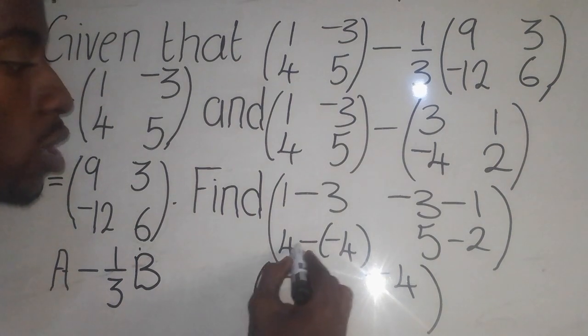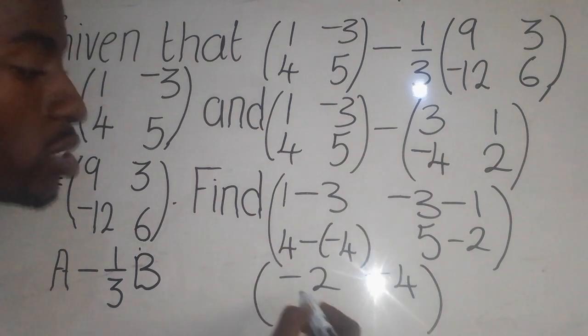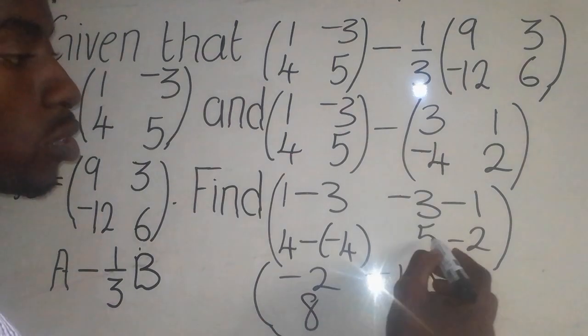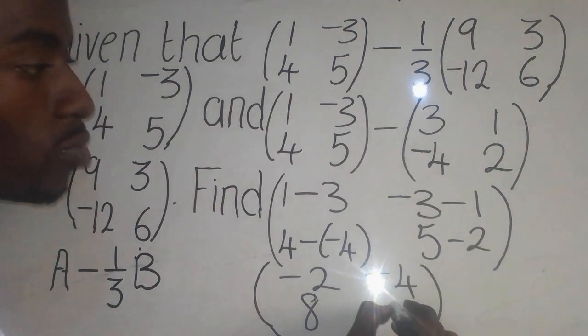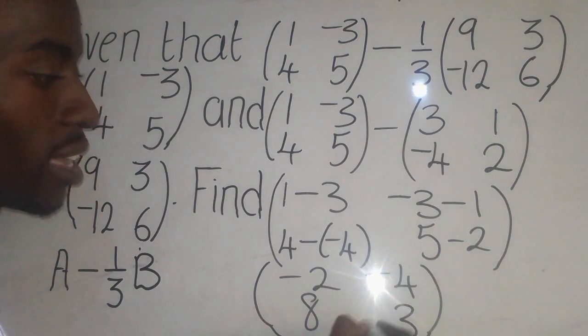So 4, negative negative, which will give me positive, so hence it will be 8 there. So 5 minus 2 is going to give me a 3 there. You are done.